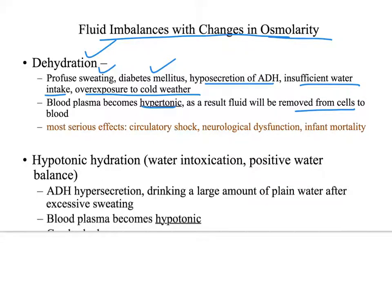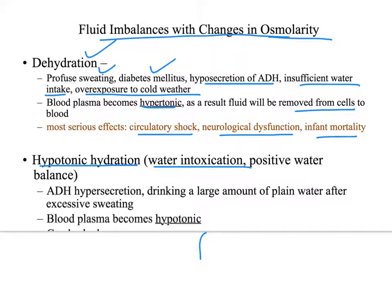Dehydration can cause circulatory shock, serious confusion, and can cause death in infants. The opposite problem is hypotonic hydration. It is possible to drink too much water — sometimes called water intoxication or a positive water balance. Too much antidiuretic hormone can cause it, as can drinking too much plain water after excessive sweating.